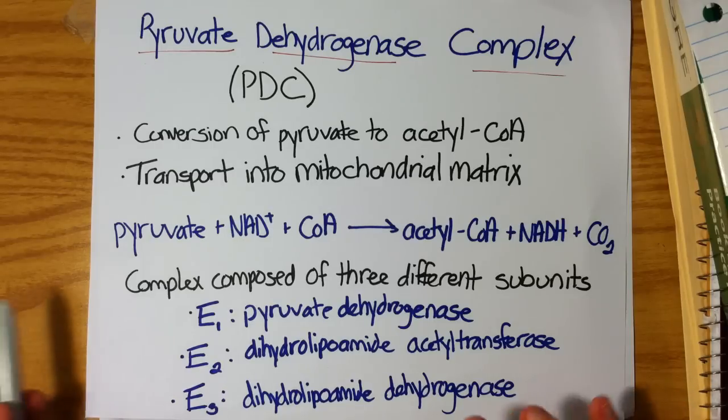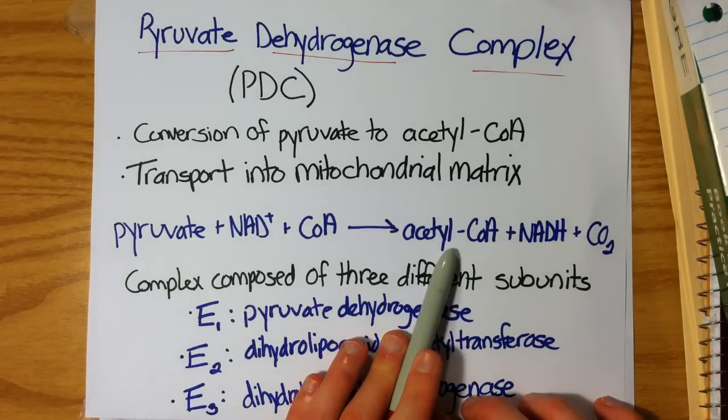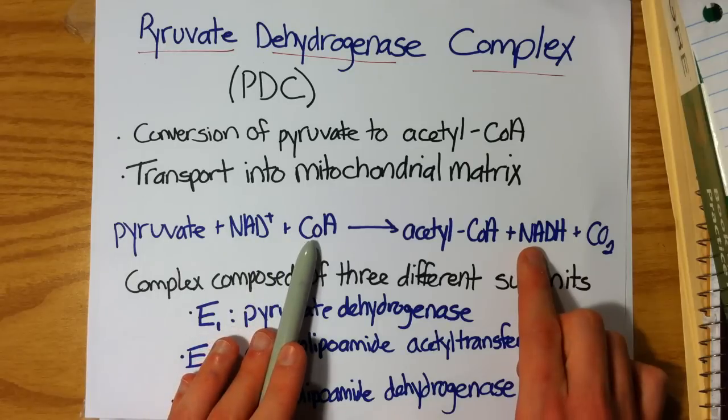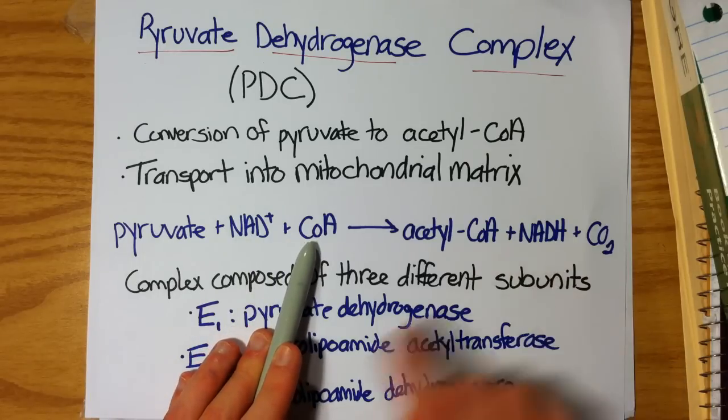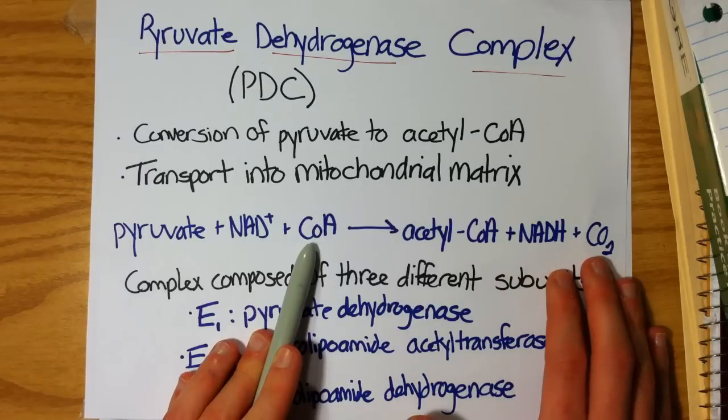Just to reiterate, the overall reaction is conversion of pyruvate into acetyl-CoA. We do a reduction here, so we pick up some electrons on the NAD+, our electron carrier. And of course we have to add coenzyme A to our reaction in order for it to get added to the acetyl group, and we give off some carbon dioxide in the process.